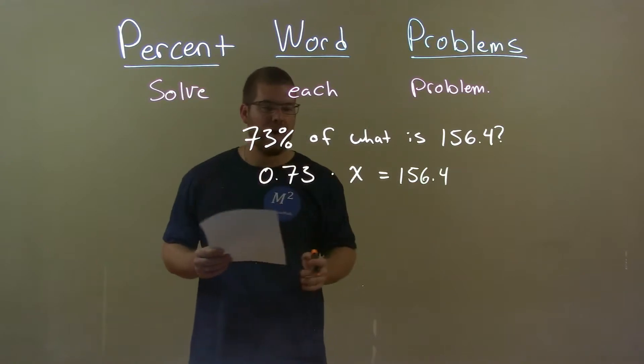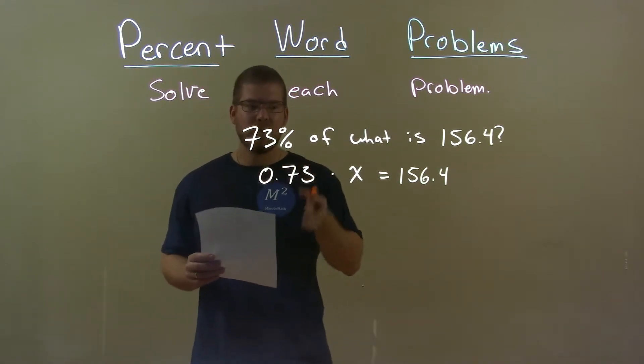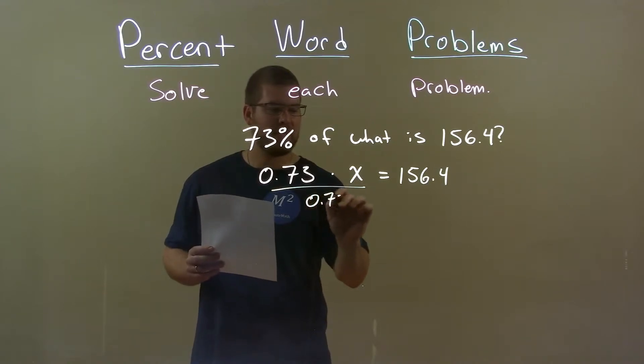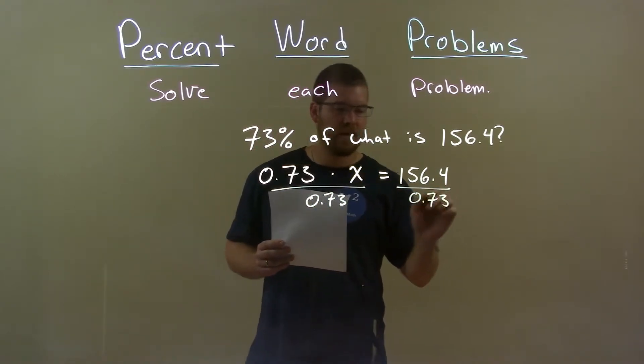Now we have to solve for x. We have multiplication here, and the opposite of multiplication is division. We divide both sides by 0.73.